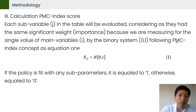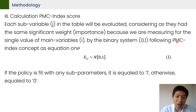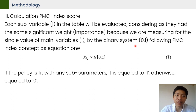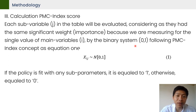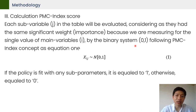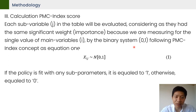For the third phase, we calculate the PMC score. We input a policy and match the policy context with each sub-variable one by one. If that context is linked to that sub-variable, it will be equal to 1; otherwise equal to 0, following the binary system of 0 and 1 as the PMC concept.